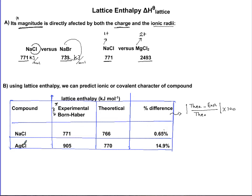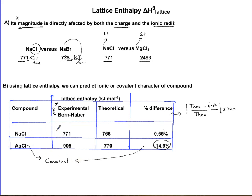Now comparing silver chloride: the experimental value is 905 kJ/mol while the theoretical value, based simply on calculations of atomic radii and charge, is 770 kJ/mol — a percent error of about 15%. This large percent difference indicates more covalent character, because the calculation based on a simple ionic description is far off from the experimental result. So the bigger the difference, the more covalent character; the smaller the difference, the more ionic the compound. Therefore, sodium chloride is more ionic in character compared to silver chloride.